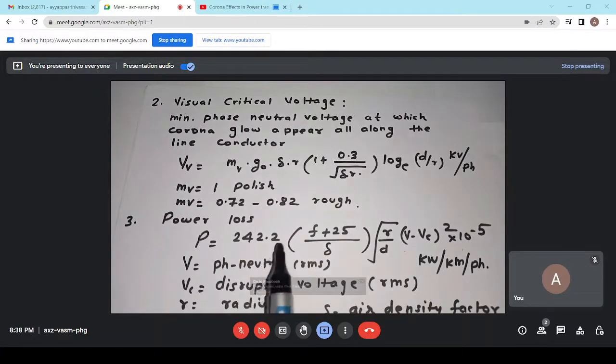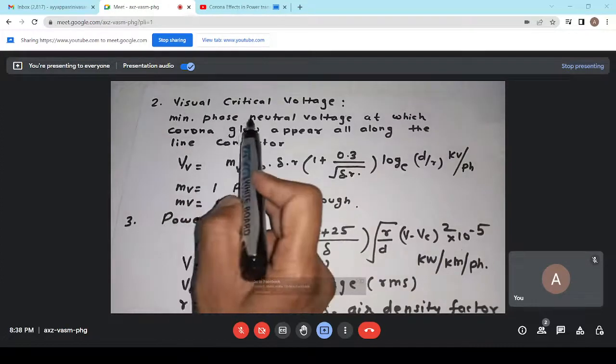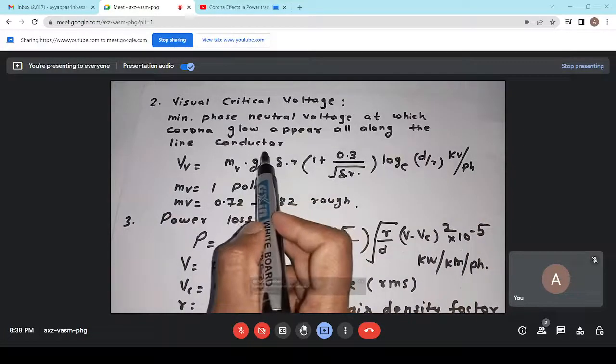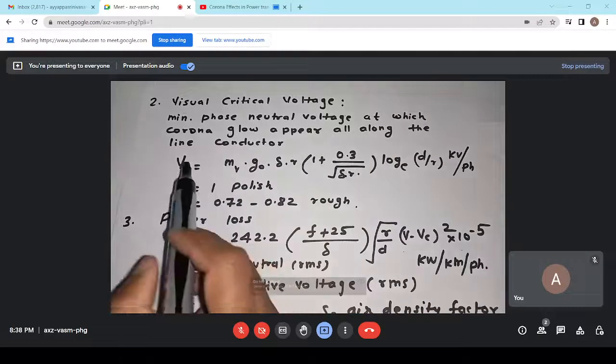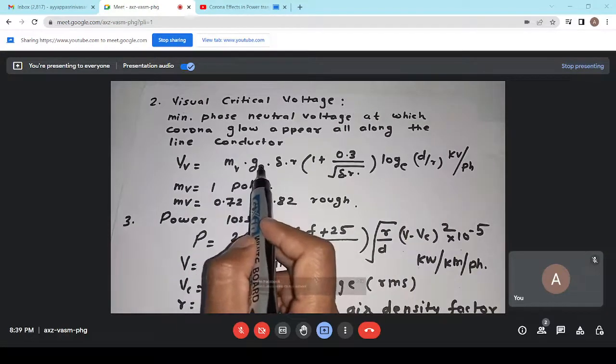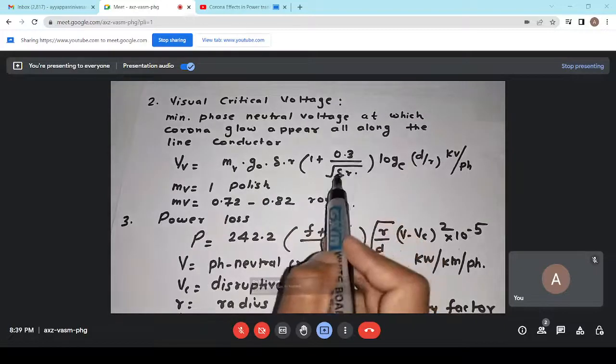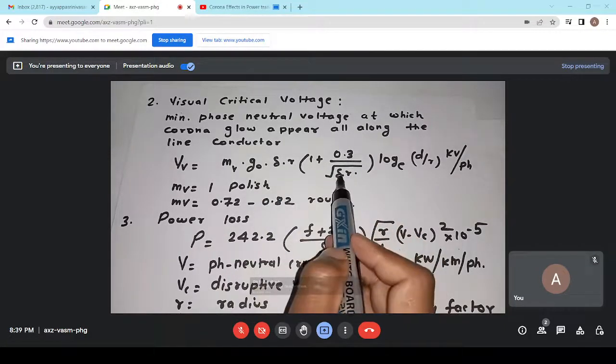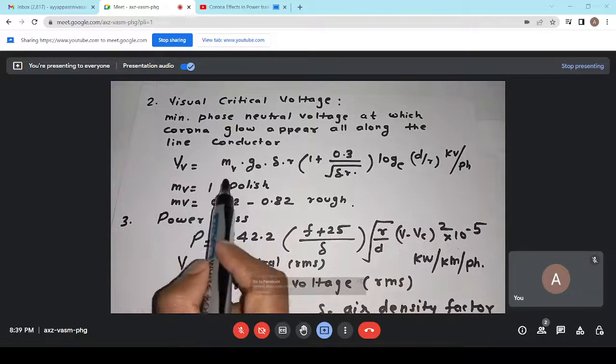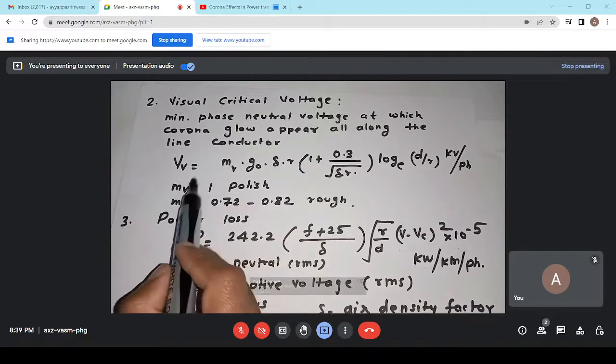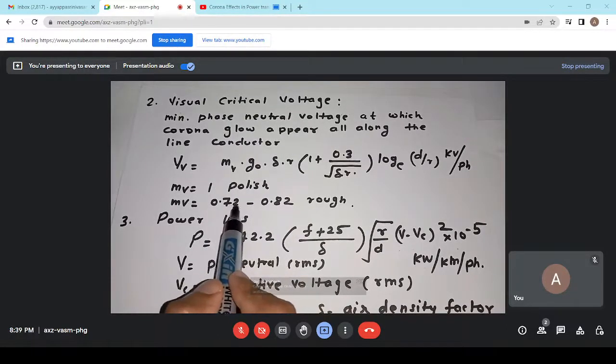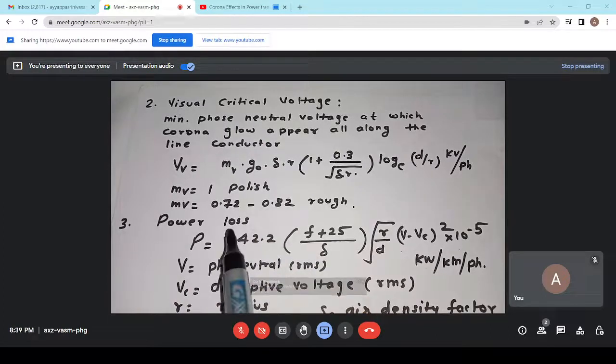Now, the next term we will discuss here visual critical voltage. Definition is minimum phase neutral voltage at which corona glow appear along the line conductor. This is the voltage where corona glow is appear. The expression for visual critical voltage is equal to MV into G0 into delta into R 1 plus 0.3 divided by under root of product of delta into R logarithmic E D by R kilovolt per phase. Now, we can see the value of MV for irregularity factor for visual critical voltage is equal to 1 when polished conductor is used. It is varied between 0.72 to 0.82 for rough surface.